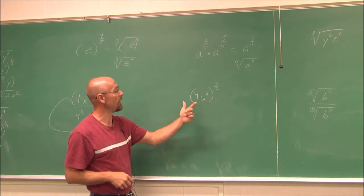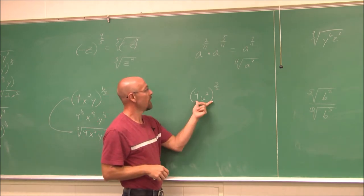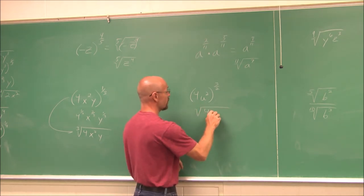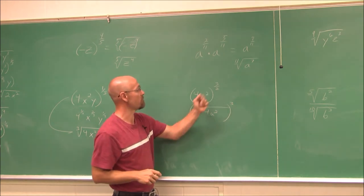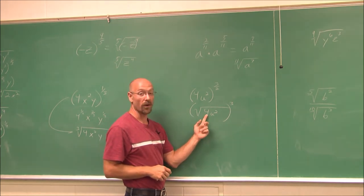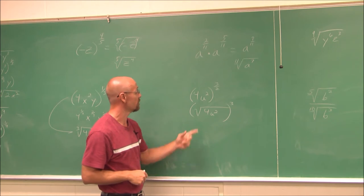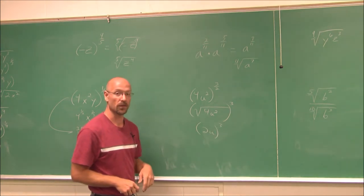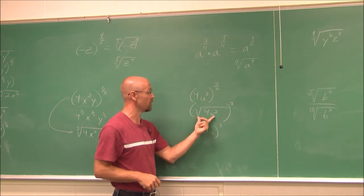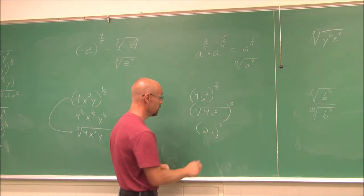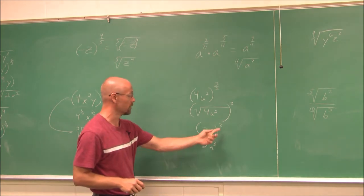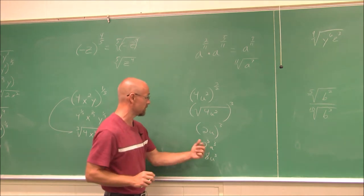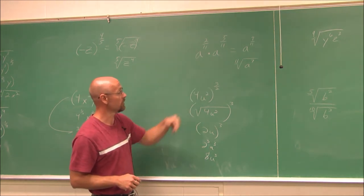For 4u² raised to the 3/2 power, I can write it as a radical with index 2 and leave the power of 3 on the outside. I've identified 4 as a perfect square and u² is obviously a perfect square. The square root of 4 is 2, and the square root of u² is u. Now I raise it to the 3rd power using the power of a product rule: 2 cubed is 8, and u cubed is u³. So the simplified form of (4u²) to the 3/2 is 8u³.